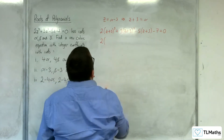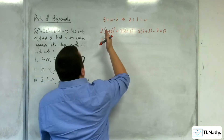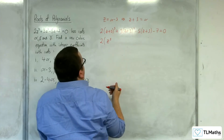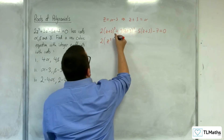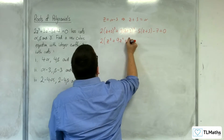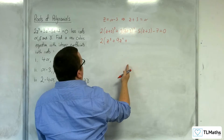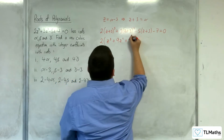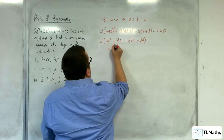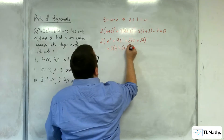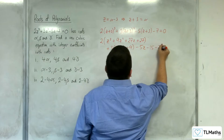So we're going to have 2 lots of — using binomial expansion — z cubed, then 3 times z squared times 3, so 9z squared, then 3 times z times 3 squared, so 27z, and then plus 27 on the end, plus 3 lots of z squared plus 6z plus 9, take away 5z, take away 15, take away 7 equals 0.